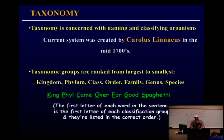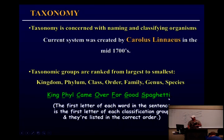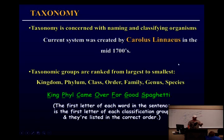You'll definitely need to know this and memorize it. When I was in high school I learned 'This King Phil Came Over For Good Spaghetti' as a mnemonic. However you remember it, it doesn't matter — just remember the order it comes in: Kingdom, Phylum, Class, Order, Family, Genus, Species. I guarantee you'll see a test question asking what are the groupings from most general to most specific.